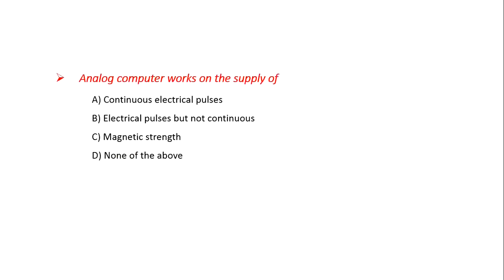Our first question is: Analog Computer works on the supply of — Option A: Continuous Electrical Pulses, B: Electrical Pulses but not continuous, C: Magnetic Strength, D: None of the above. Analog Computer works on the supply of Continuous Electrical Pulses. Option A is the correct answer.